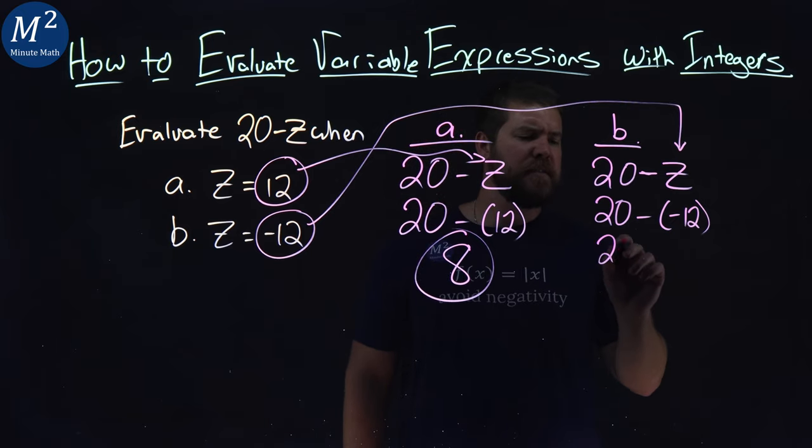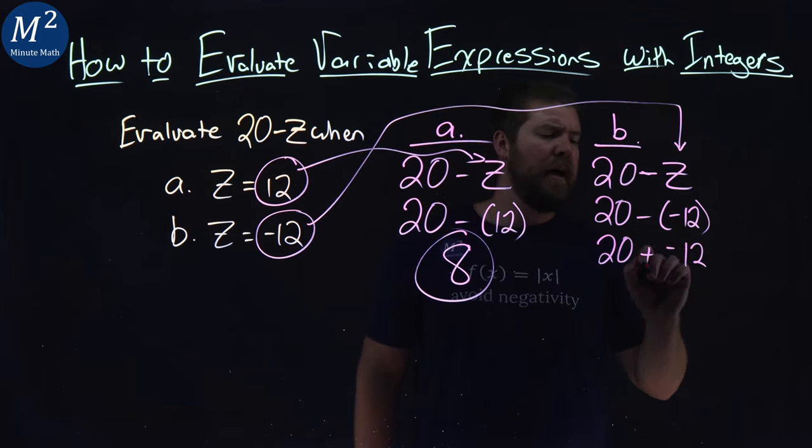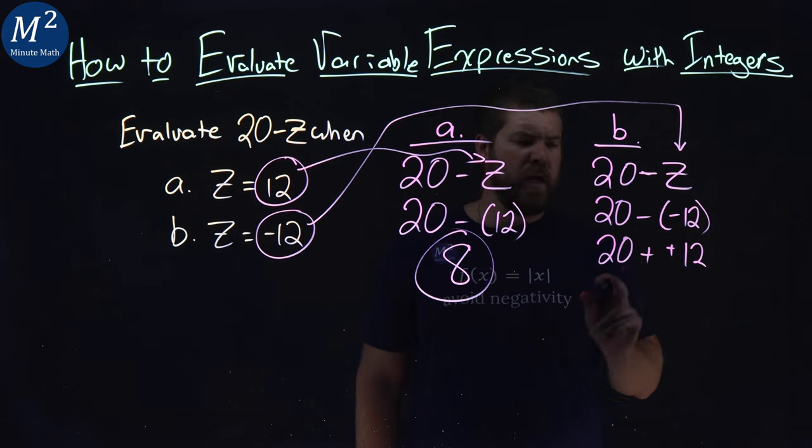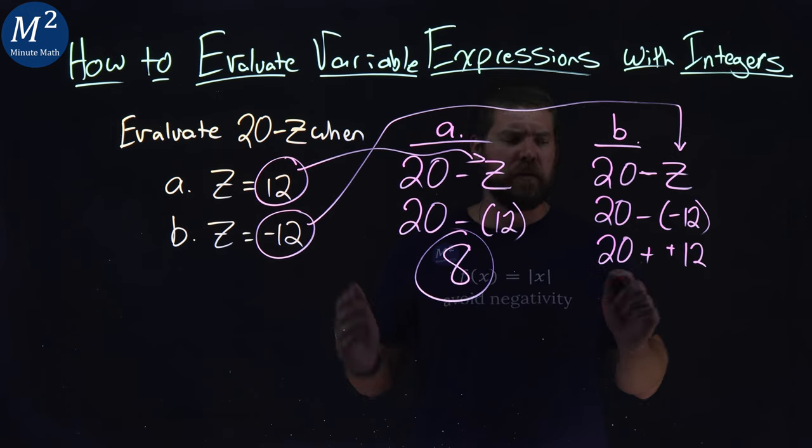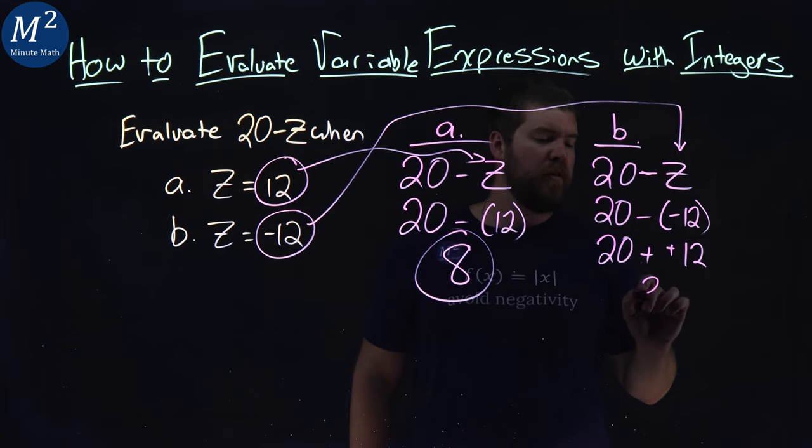Well, subtracting a negative is the same thing as adding a positive. So we have 20 plus a positive 12, which again is a much easier question. 20 plus 12 is 32.